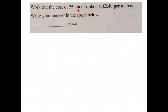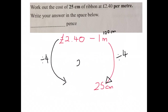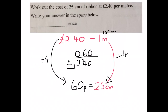Work out the cost of 25 centimetres of ribbon at £2.40 per metre. For £2.40 you can get one metre of ribbon and we want the cost of 25 centimetres. One metre is 100 centimetres, and 25 centimetres is a quarter of a metre, so divide by four. Take £2.40 and divide by four: four into two does not go, four into 24 is six, four into zero is zero. So 25 centimetres, a quarter of a metre, will cost 60p.